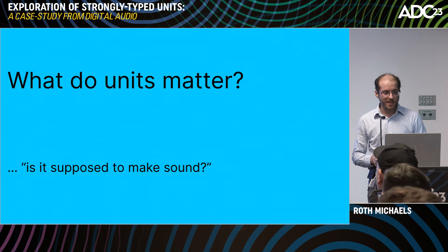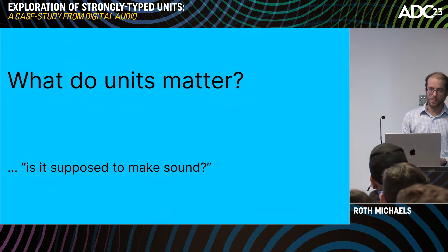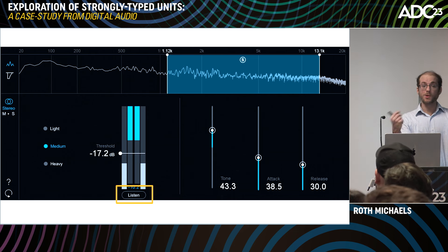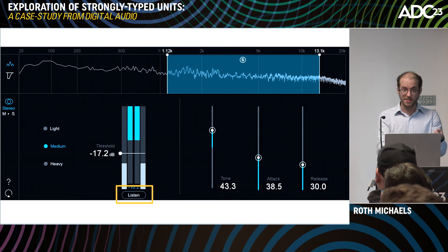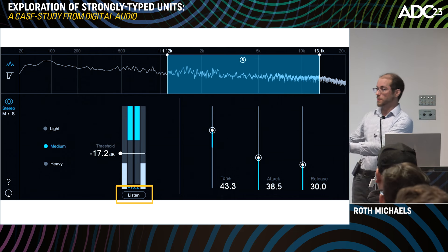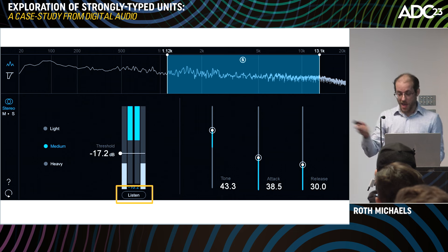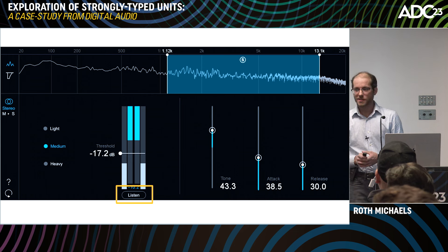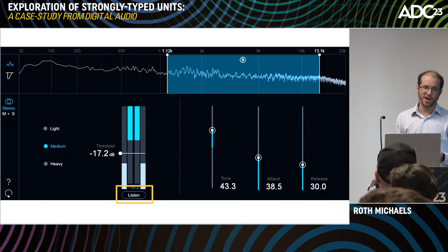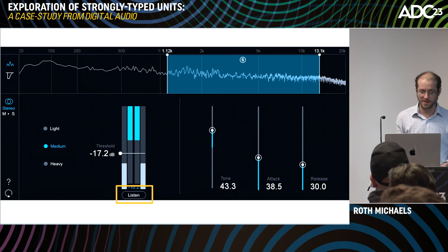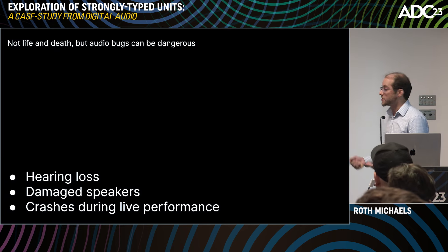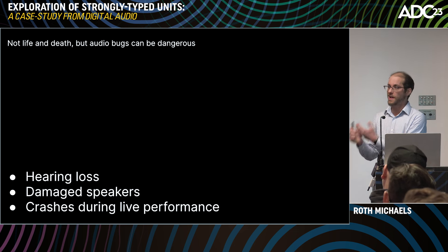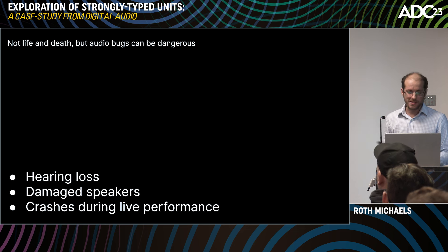Another reason it matters: we have these mistakes in audio. When I was first starting at iZotope, I was working on a feature — adding a little crossfade — and the DSP was so slow in debug I couldn't hear it on my own machine. A QA engineer had a release build locally and very politely said, 'Roth, is this supposed to make any sound?' I thought I did it right, but 35 milliseconds ended up as a 35-second crossfade. You could damage people's ears, damage speakers, or cause crashes in live performance — so this stuff is really important.